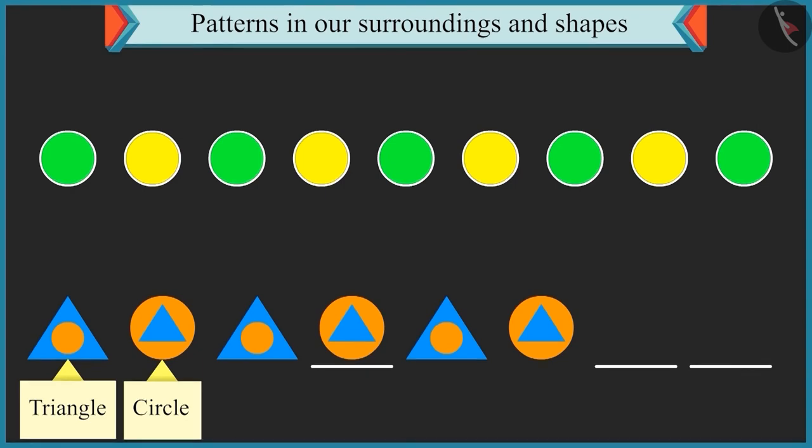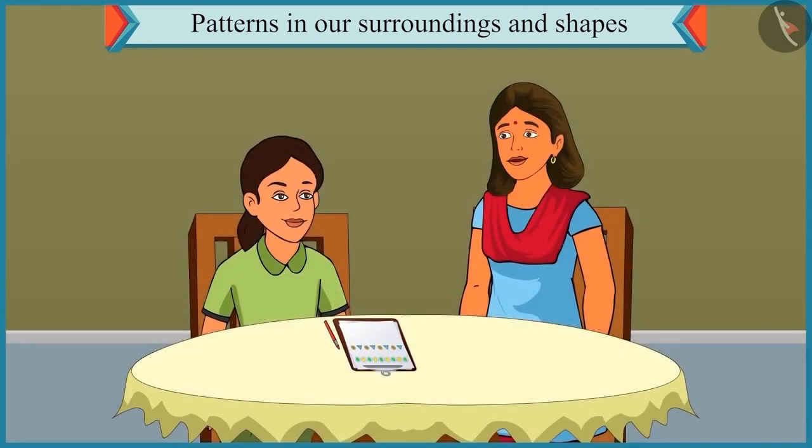Come on. Now try building this pattern. A shape with a small circle inside a triangle would come next. What will come after that? A shape with a small triangle inside a circle would follow this. Absolutely right. Well done.